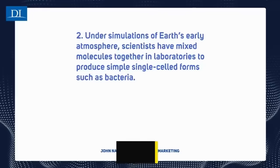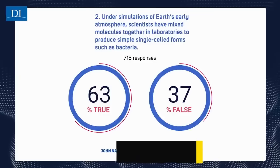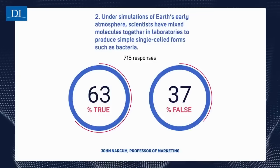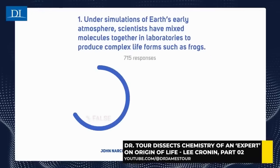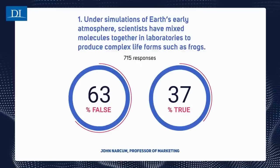There's an interesting statistic about how many people think that scientists have been able to mix molecules together in laboratories to produce single-celled life forms such as bacteria. Over two-thirds of the public think that scientists have made bacteria — mixed chemicals together to make simple single-celled organisms — and this is totally untrue. In fact, one-third of the population thinks that scientists have made simple animals like frogs in the laboratory. It's because of the loose talk of people like Lee Cronin that it leads to this type of misconception.